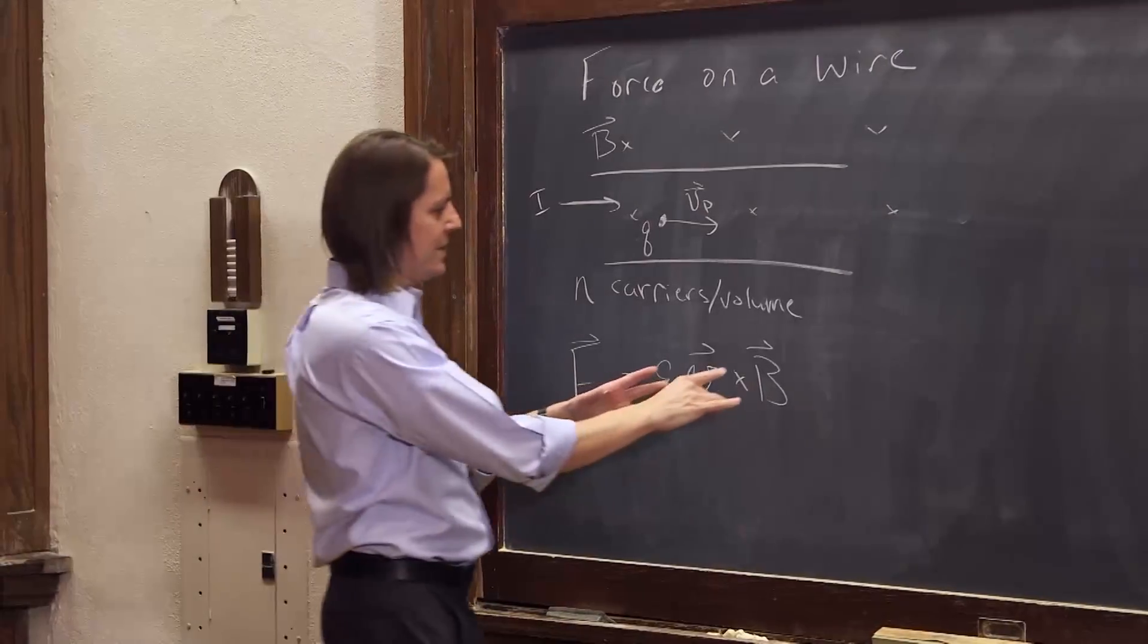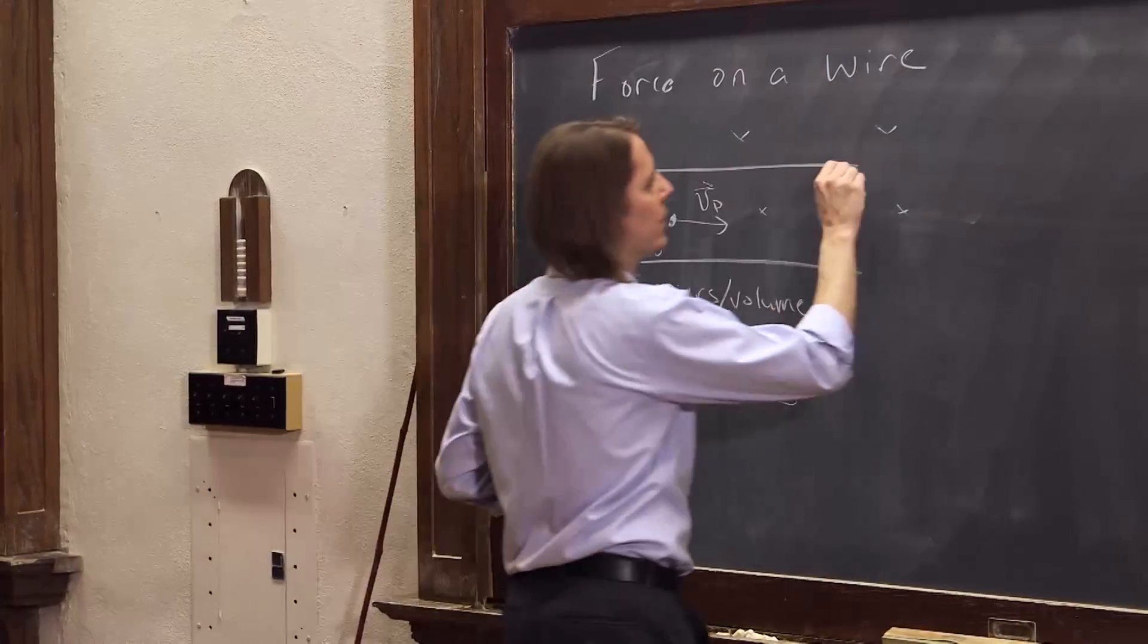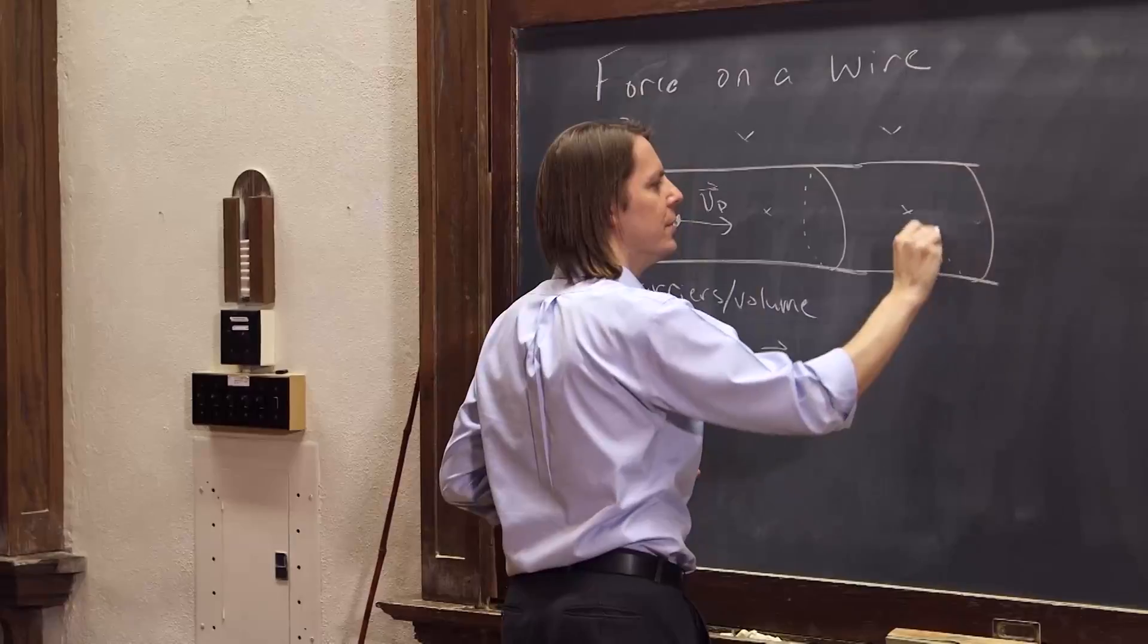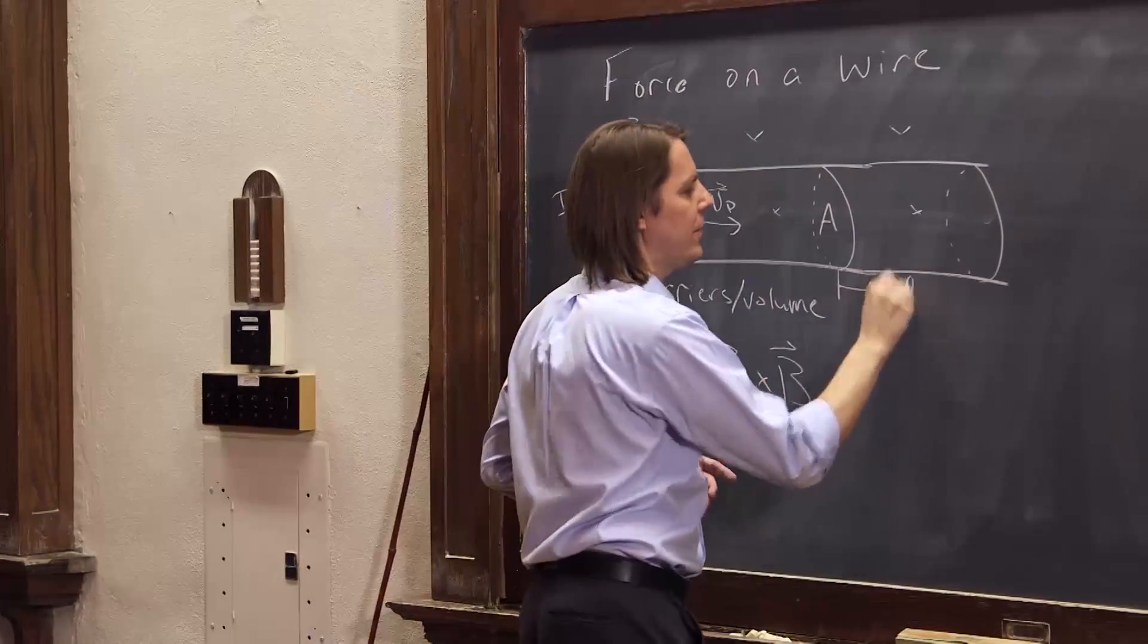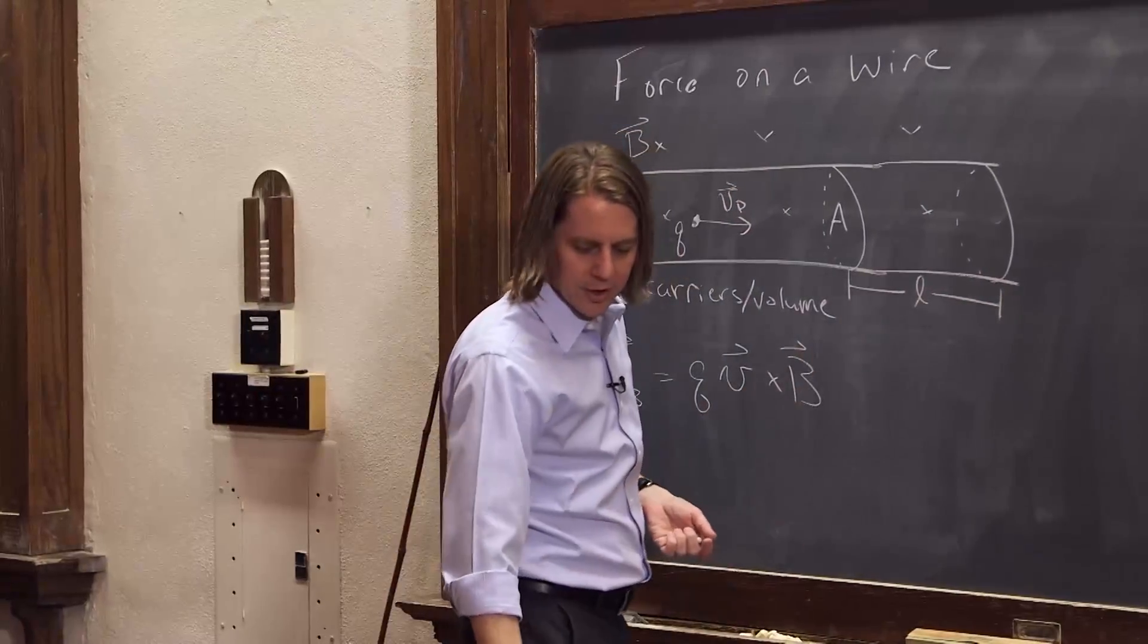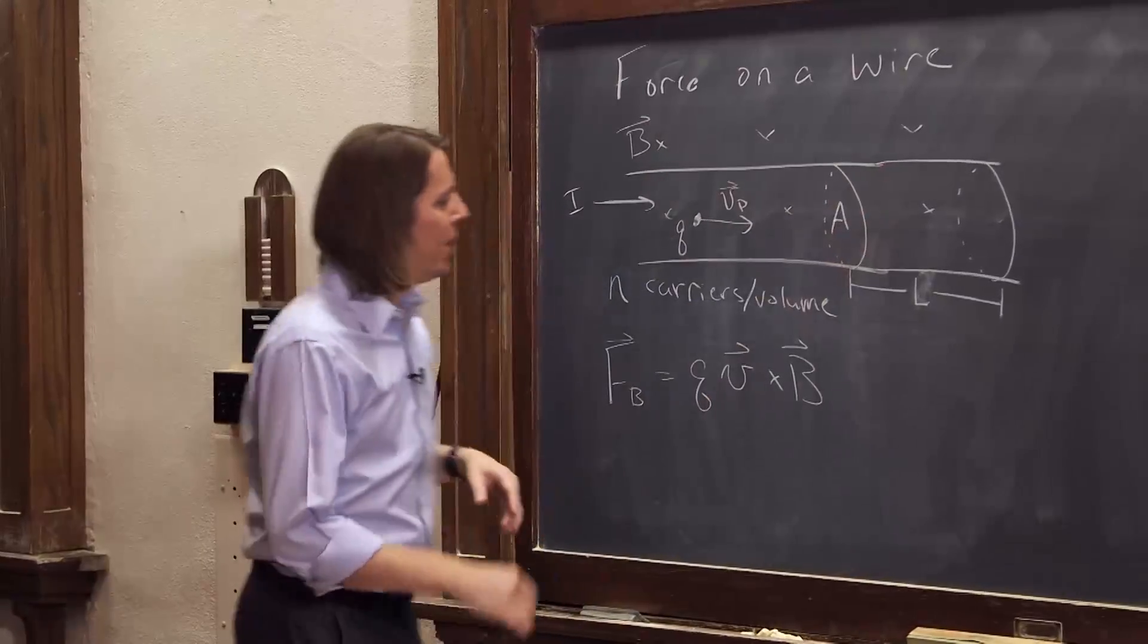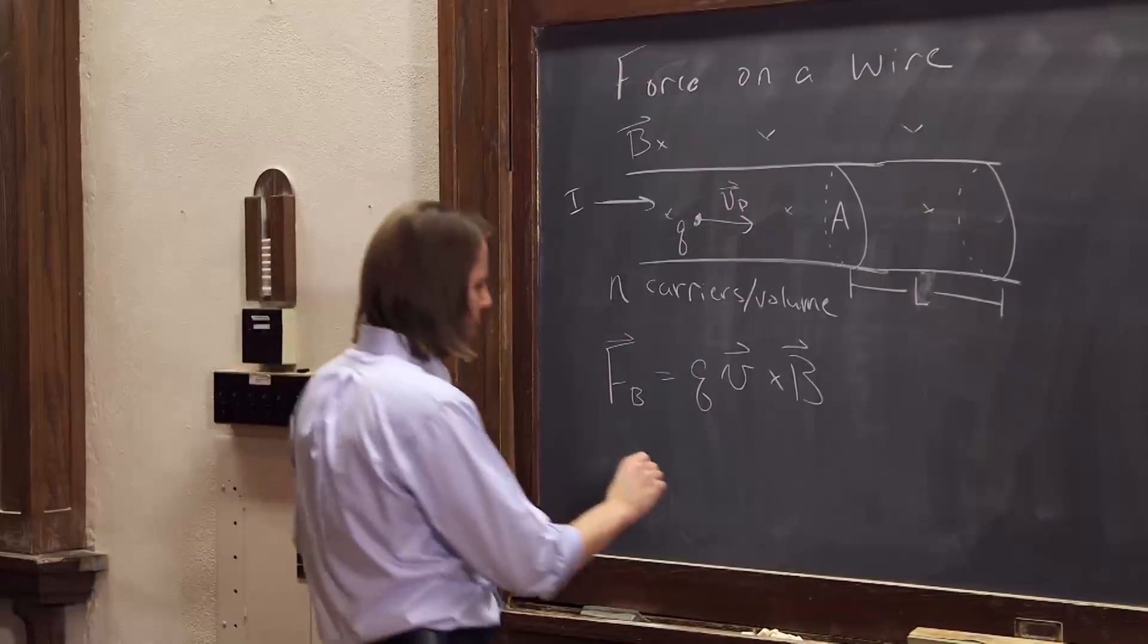So now what we want to do is apply this force to all the charge carriers in a piece of the wire. So we make the wire a little bit longer and let's think about a piece of it. If we grab a little cylindrical section of it like this, cross sectional area A and length L. Let's call it a big L. That's a little volume piece of the wire. So now, let's see if instead of just Q, we can put all the charges in, not just the single charge.